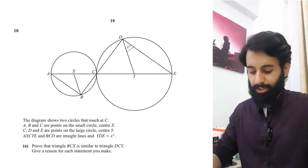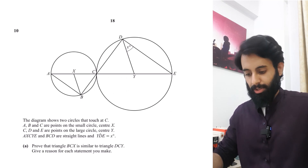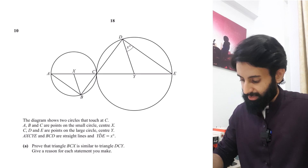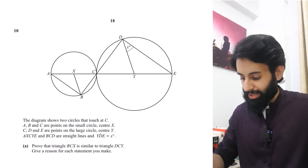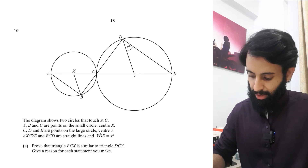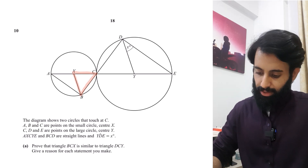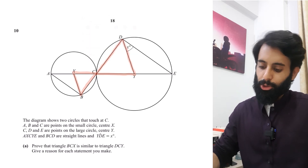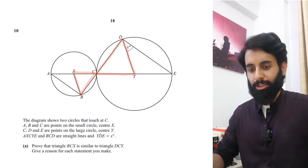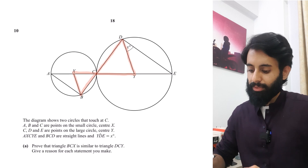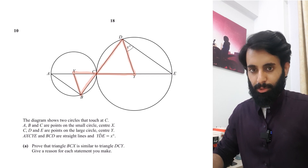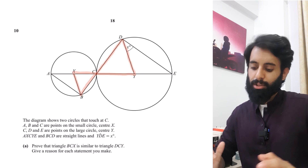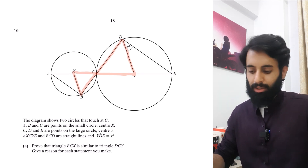The diagram shows two circles that touch at C. A, B, and C are points on the small circle with center X. C, D, and E are points on the large circle with center Y. A, X, C, Y, E and B, C, D are straight lines, and angle YDE equals x degrees. We need to prove that triangle BCX is similar to triangle DCY. Before starting the proof, first get a good idea of the properties being used, then it'll be much easier.